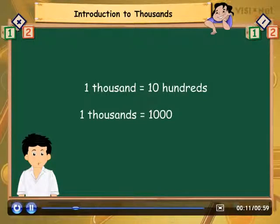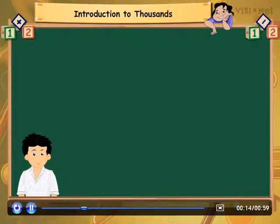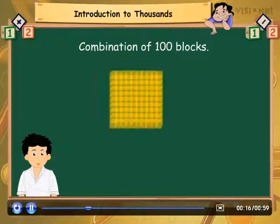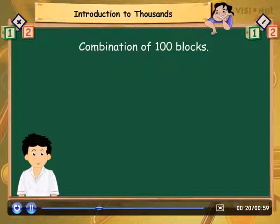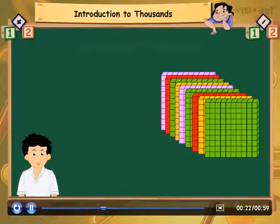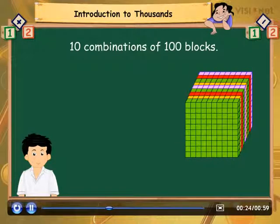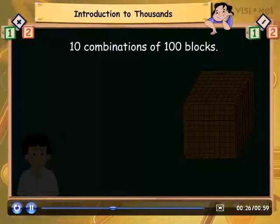Let us try to represent one thousand in the form of a figure. We know that one hundred can be represented by this figure. As one thousand is a combination of ten hundreds, the figure that represents one thousand looks like this.